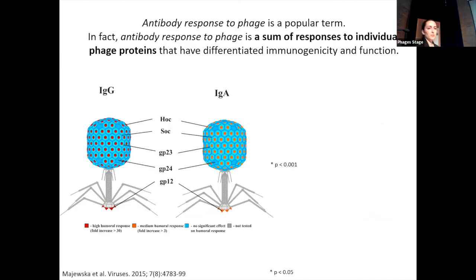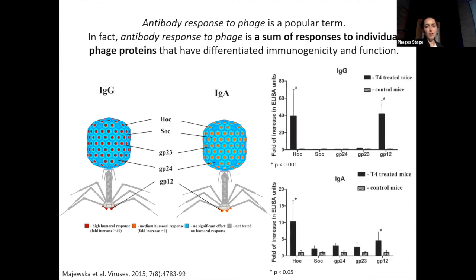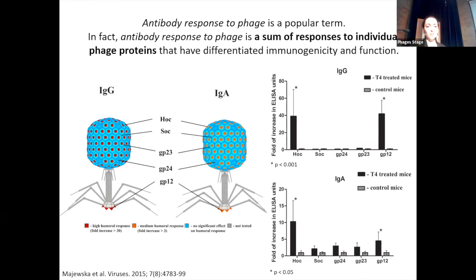As we know, antibody response to phage is a popular term. In fact, antibody response to phage is a sum of responses to individual phage proteins that have different immunogenicity and function. On the right we can see that two phage proteins are highly immunogenic: HOC and GP12. These results were confirmed by ELISA tests. GP12 is a protein which allows the phage to attach to bacteria.